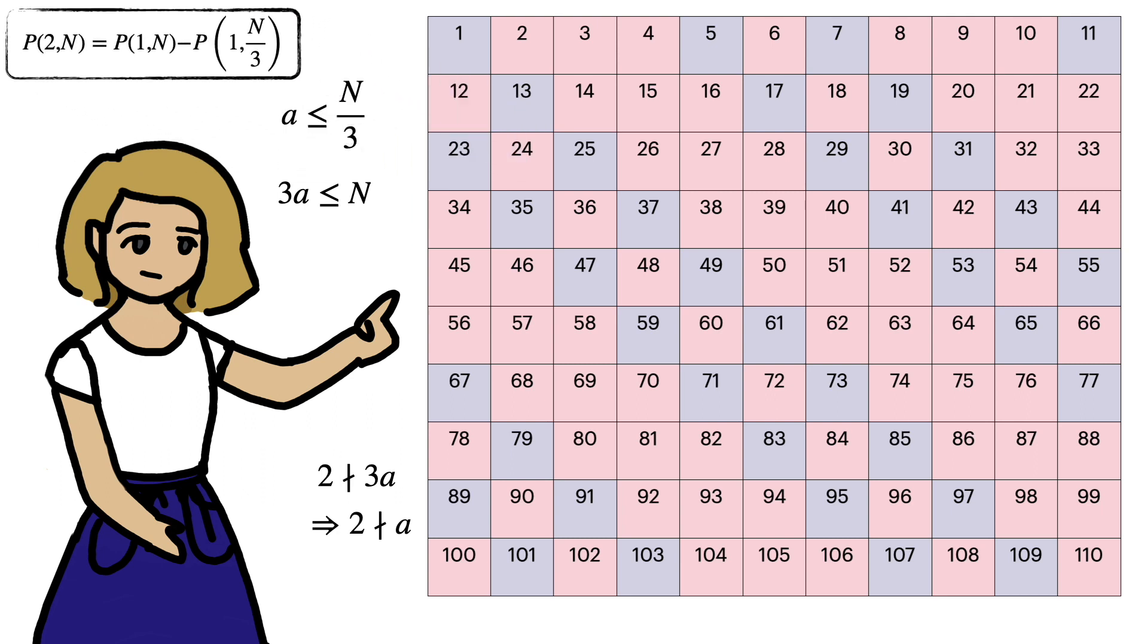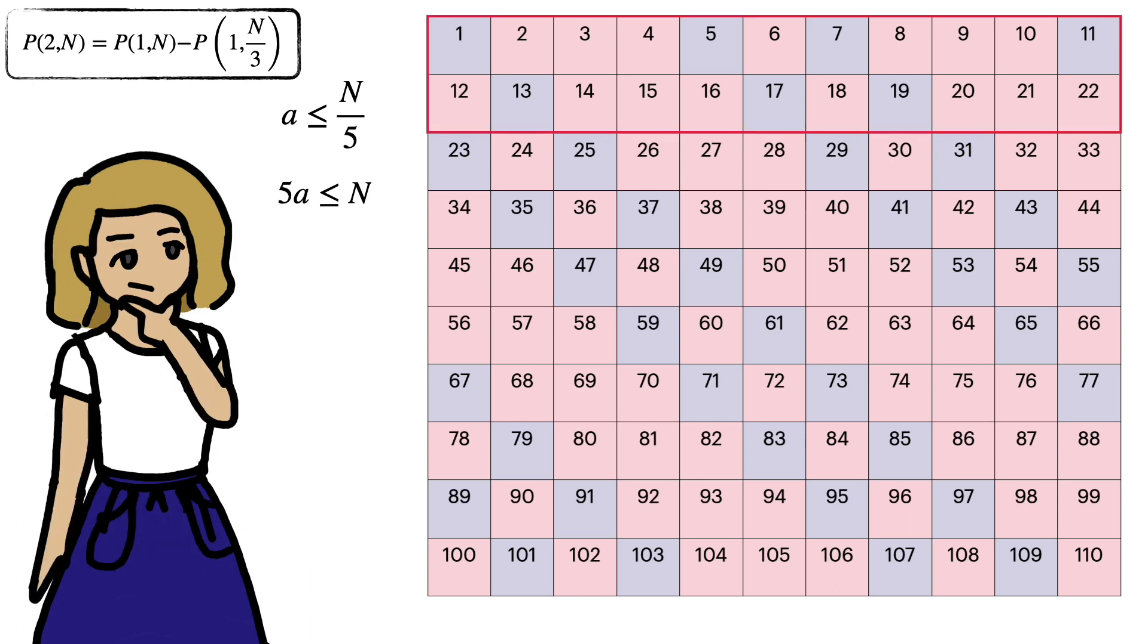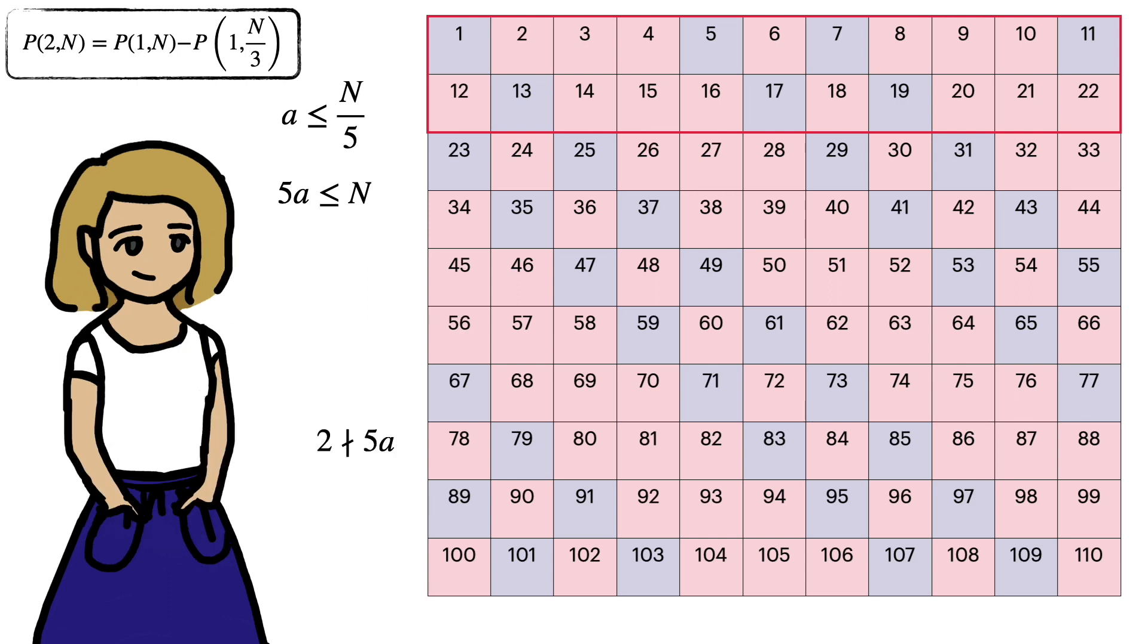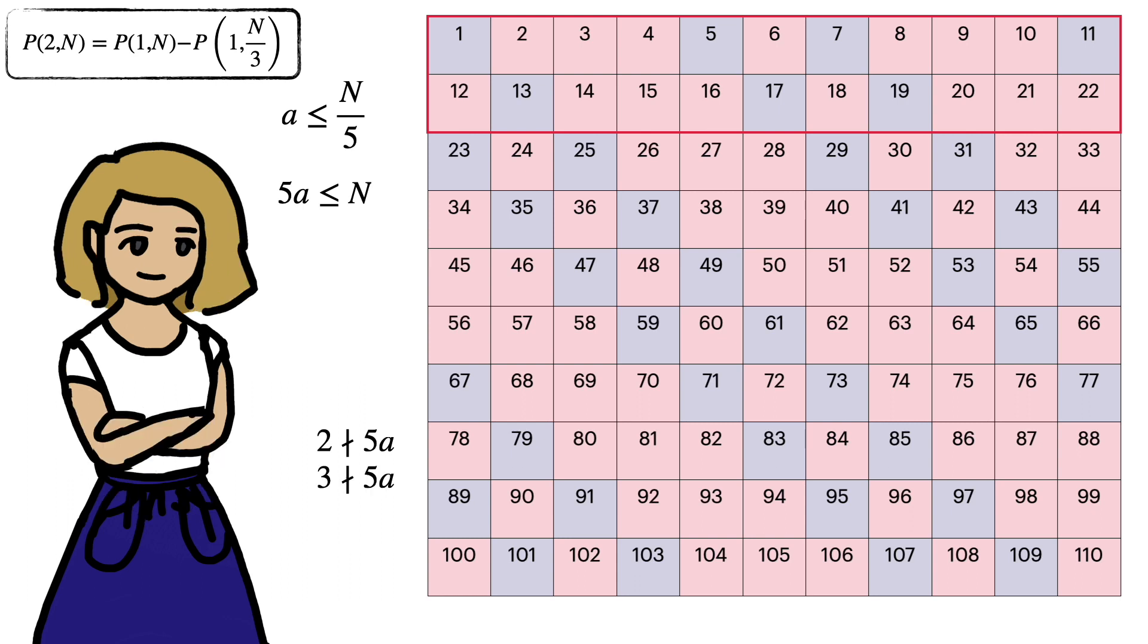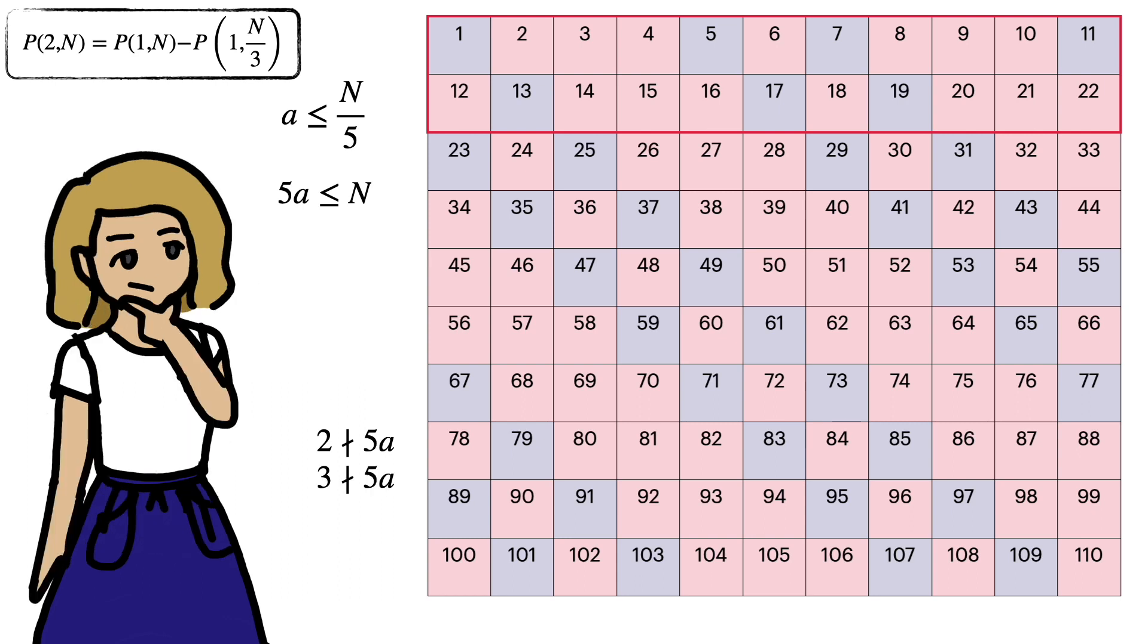And now, let's do the third iteration. We look at a below n/5. Now, when we remove instances of 5a, we want them to be from blue squares. This requires that 5a isn't divisible by 2 and 5a isn't divisible by 3. Now, 5 isn't divisible by 2 or 3. Generally, primes aren't going to be divisible by smaller primes. So these conditions are the same as saying a can't be divisible by 2 or 3, which is the same as saying a is blue.